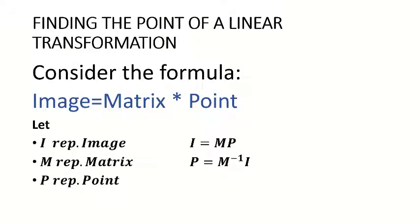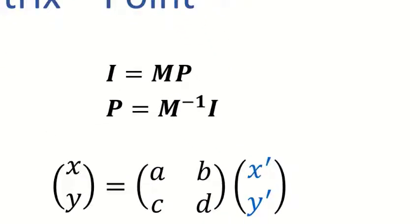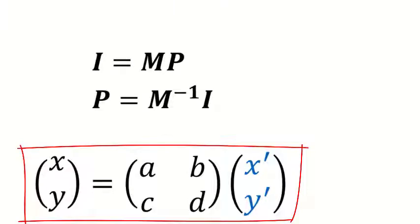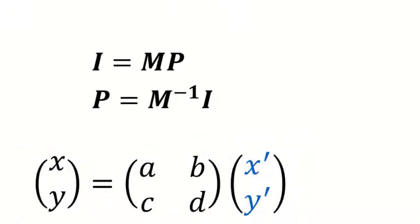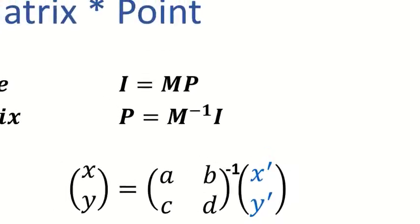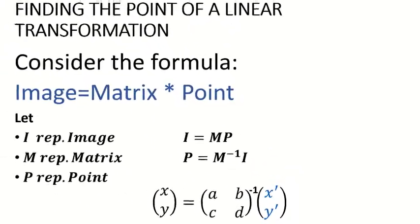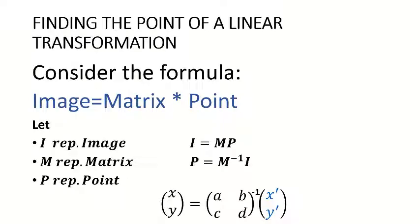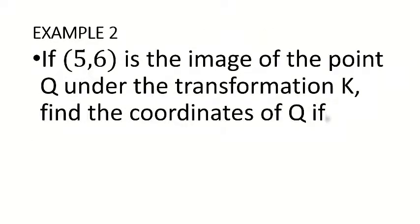Remember the inverse of the matrix — if you have forgotten, please revise. The formula is: [X; Y] = [A B; C D] inverse × [X image; Y image]. Example 2: if (5, 6) is the image of point Q under transformation K, find the coordinates of Q, given K such that XY maps onto (2Y + X, 3X + 4Y).